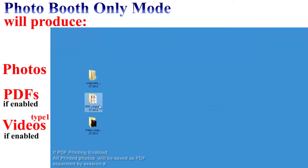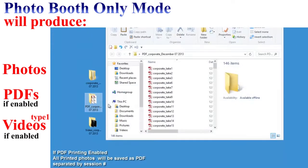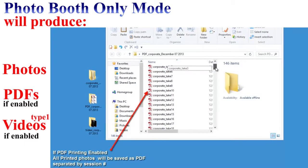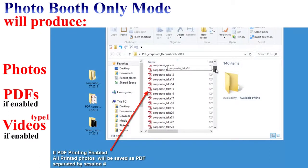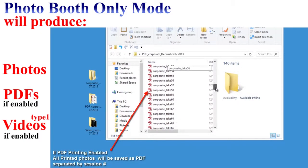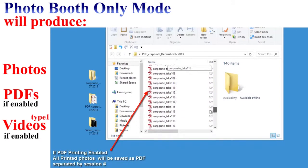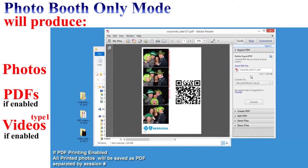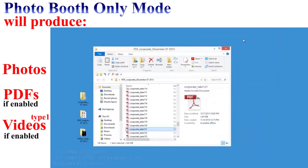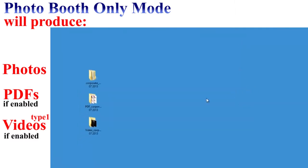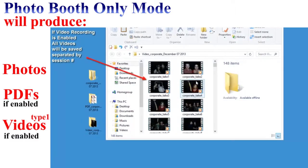Each take folder includes individual photos taken by the camera. The second folder is where all of the PDF files are stored. Inside this folder you will see PDF files — these are copies of what were printed while running the PT Booth software, separated by take number.